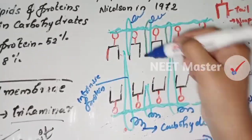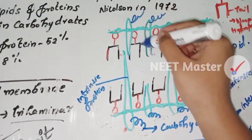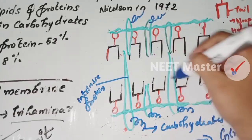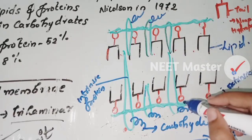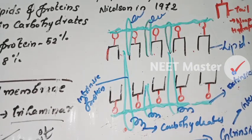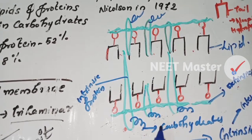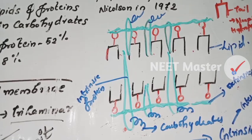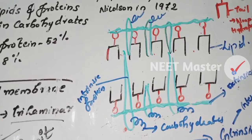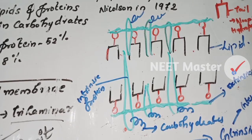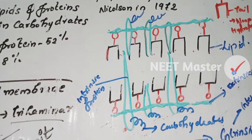Lipids make up 40% of the membrane, proteins 52%, and carbohydrates 8%. Lipids are mainly phospholipids, partially and fully embedded. The phospholipid bilayer is seen in the plasma membrane. That is the fluid mosaic model.